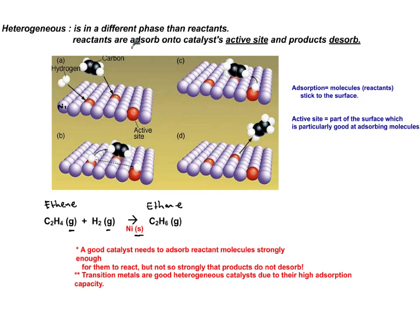This surface phenomenon is known as adsorption — not absorption. It's sticking to the surface. Some of these atoms are active and some are not. In red, I'm showing you the active site — that's where usually the reaction takes place. These active sites have affinity for hydrogen, so hydrogen comes there.